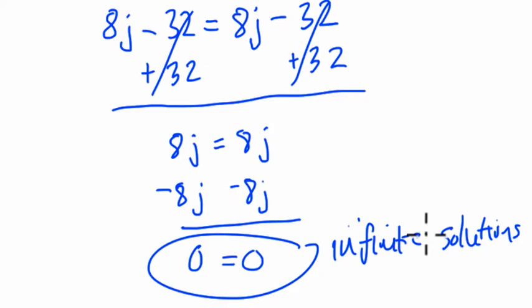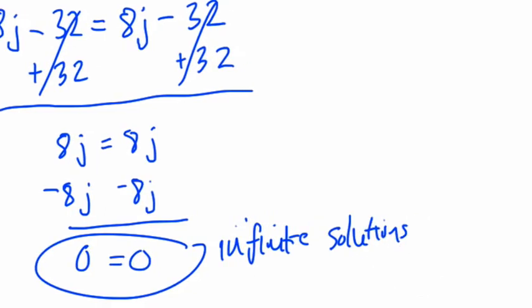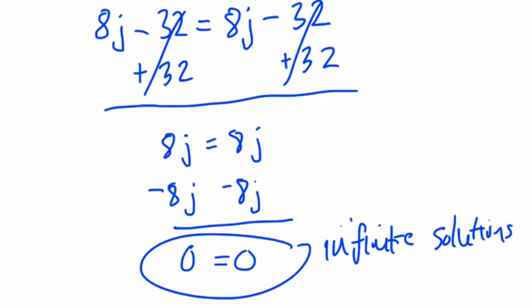So, if you end up with something that says 0 equals 0, or 2 equals 2, or 5 equals 5, this means there are infinite solutions. It always, these equations are always balanced for any number you plug into it.